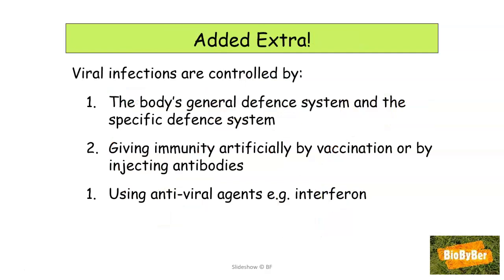As an added extra, viral infections are controlled by the body's general defense system, which basically involves a barrier system that keeps microbes out or deals with them once inside. Examples include our skin acting as a physical barrier, mucous membranes in our nose trapping viruses, stomach acid killing them, and if they enter the bloodstream, phagocytes or white blood cells literally gobble them up.